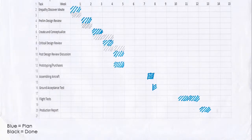This is our Gantt chart. The blue lines represent the planned timeline for the project, whereas the other timeline represents when the actual work was carried out.